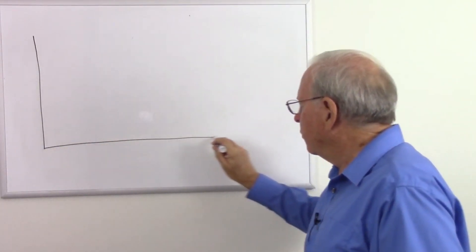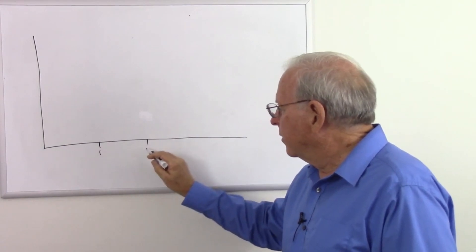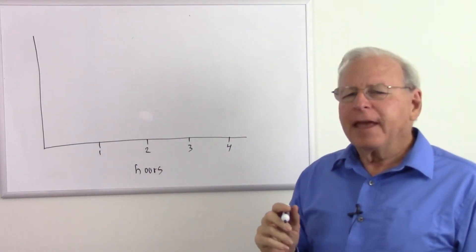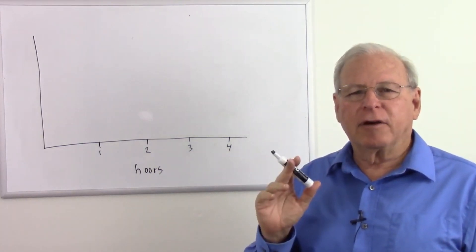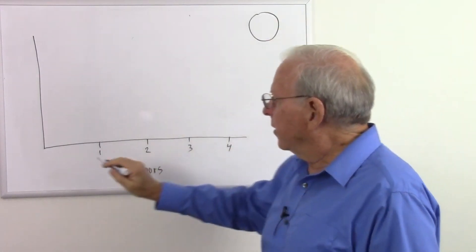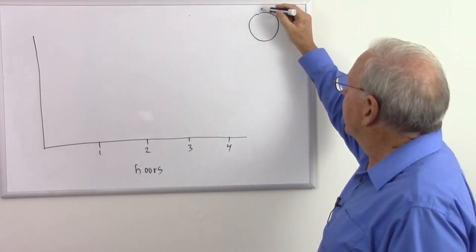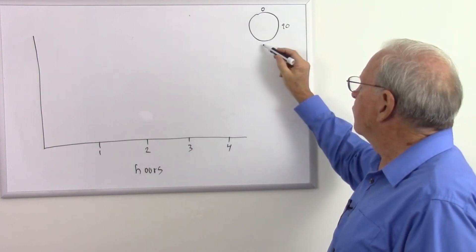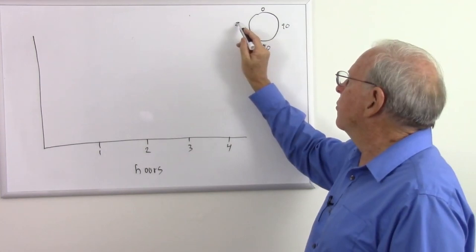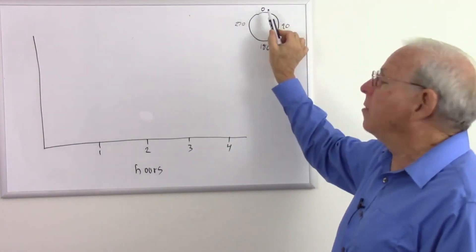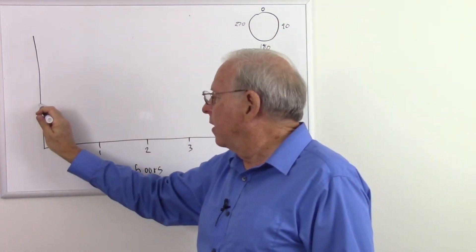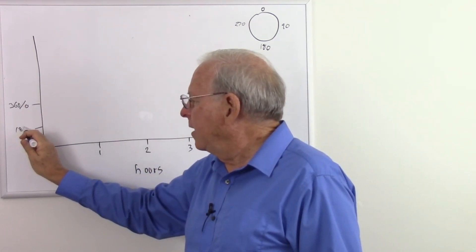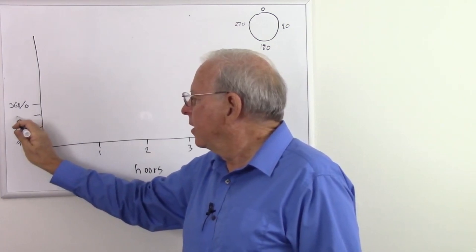We'll draw our graph again. The vertical axis is unknown yet, but the horizontal axis will still be time: 1 hour, 2 hours, 3 hours, 4 hours. This time I'm going to measure the position of the minute hand of a clock. If the hand is pointing straight up, we're at 0 degrees; pointing right, 90 degrees; straight down, 180 degrees; and pointing left, 270 degrees. On the vertical axis let's mark 90, 180, 270, and 360/0 degrees.